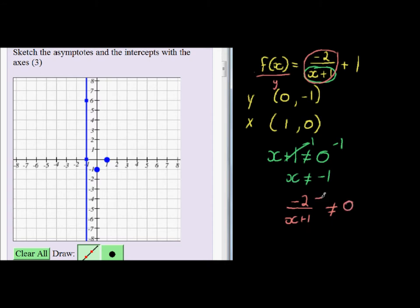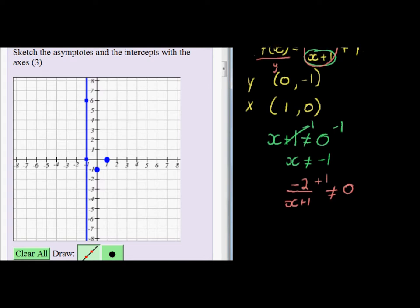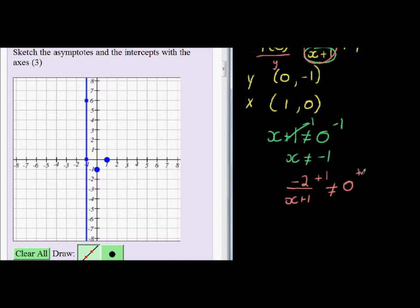We need to add another 1 here to get the expression on the right-hand side. If we add a 1 on both sides, we see here this is y, and y can never be equal to 0 plus 1 is 1.